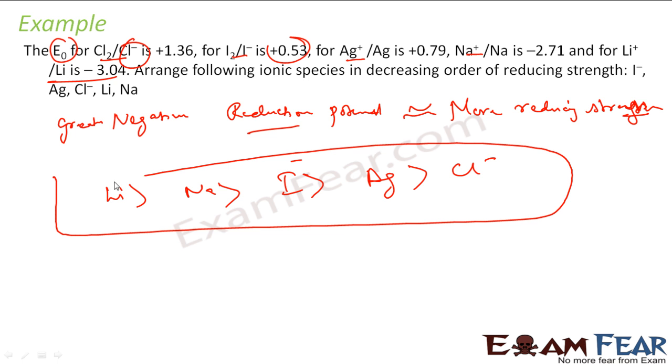This is the highest. Greater negative reduction potential means more reducing strength, simple formula we have to use.